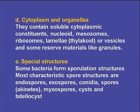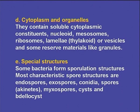The cytoplasm and organelles contain soluble cytoplasmic constituents, nucleoid, mesosomes, ribosomes, lamellae or thylakoids or vesicles, and some reserve materials like granules. Special structures are also present in some bacteria — they form sporulation structures, and the most characteristic spore structures are endospores, exospores, conidia spores (echinates), myxospores, cysts, and dalocytes.